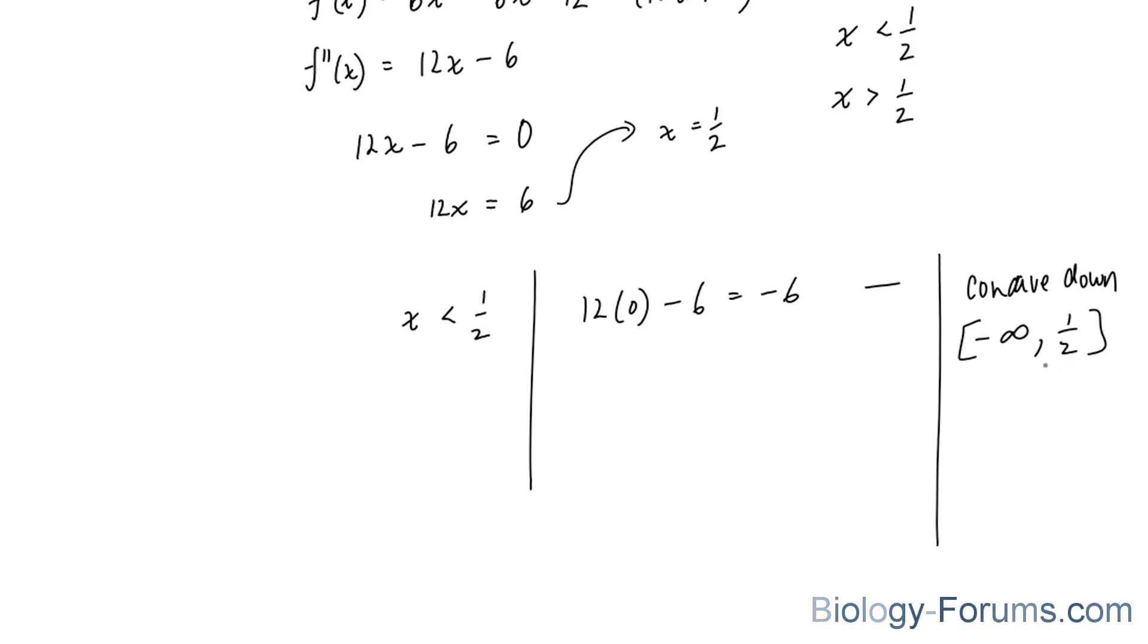We're going to perform the same test for when x is greater than half. And when x is greater than half, let's pick the number 1. 12 times 1 minus 6 gives us a positive value, positive 6. So therefore, when x is greater than half, it is concave up.